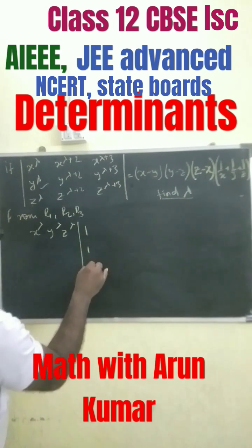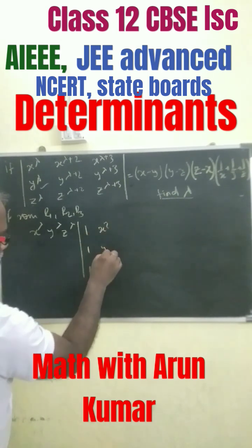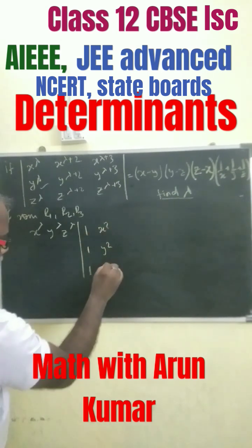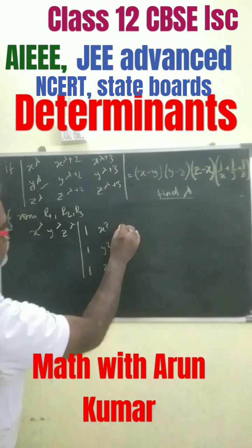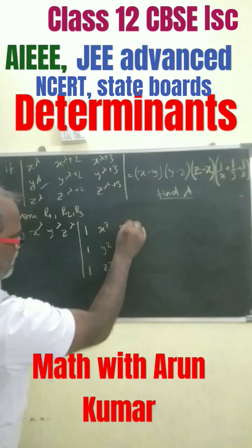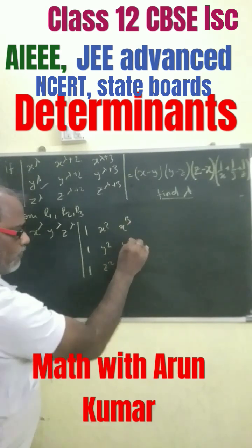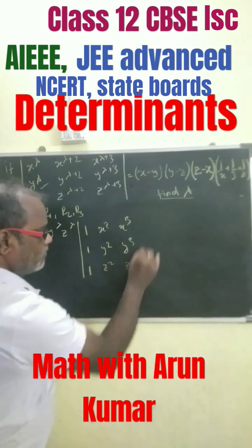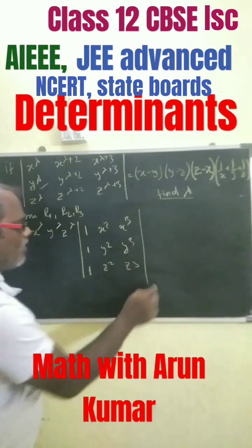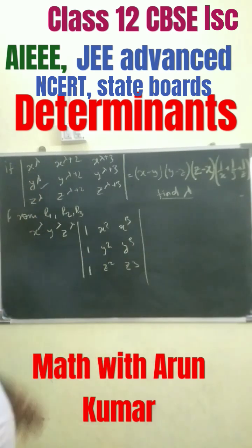The resulting matrix has entries 1, 1, 1 in the first row; x squared, y squared, z squared in the second row; and x cubed, y cubed, z cubed in the third row.